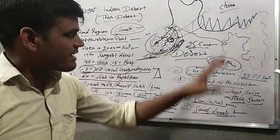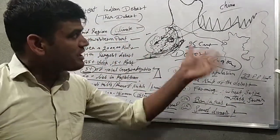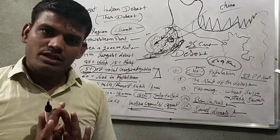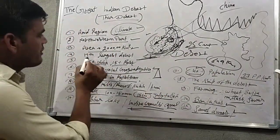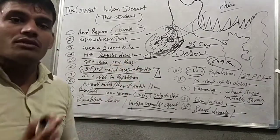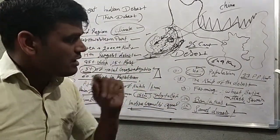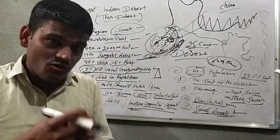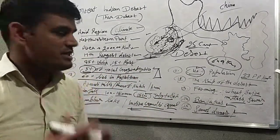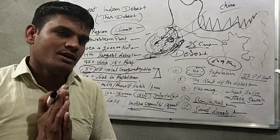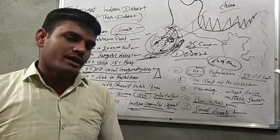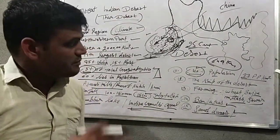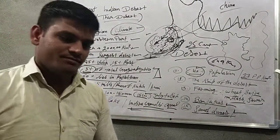This is the basic concept of the Indian desert. The Indian desert is the 17th largest desert in the world. In the next video we will discuss about the Indian Plateau. Thank you and take care.